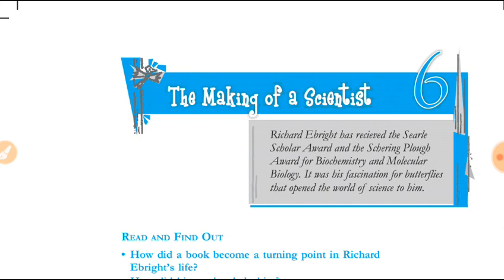Richard's article, written with his friend, was published in the scientific journal 'Proceedings of the National Academy of Science'. He was only 22 years old at that time. It was the first time that the research work of college students was published — a rare honor for Richard, who became successful at a very young age.